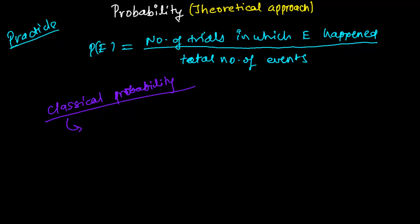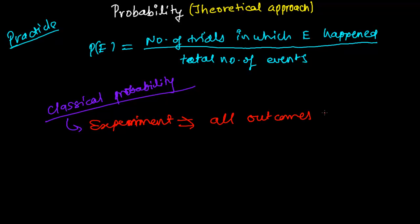In every experiment, all outcomes are equally likely. What I mean to say is something like this: suppose I have a coin. This is my coin, and I am giving it one head side and one tail side.